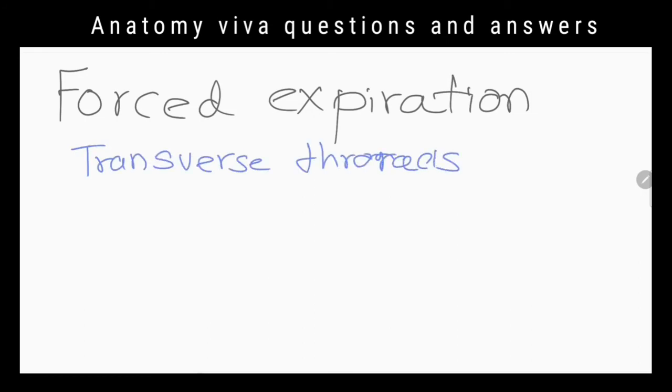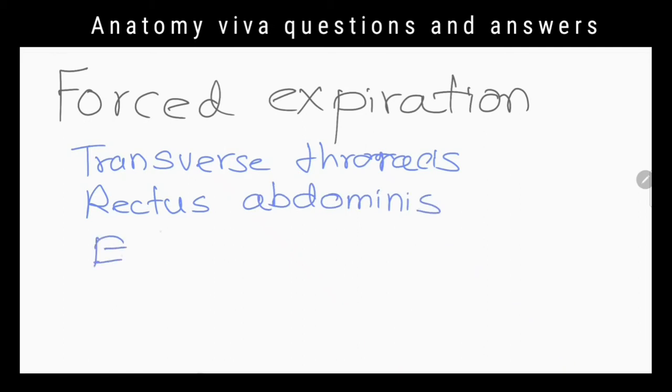Which muscles come into action in forced expiration? Transverse thoracis, rectus abdominis, external oblique, internal oblique, transverse abdominis, and latissimus dorsi.